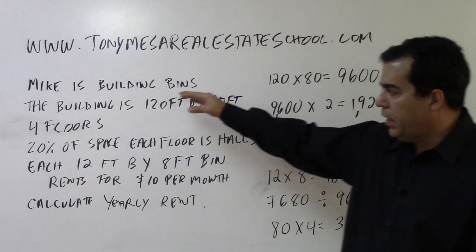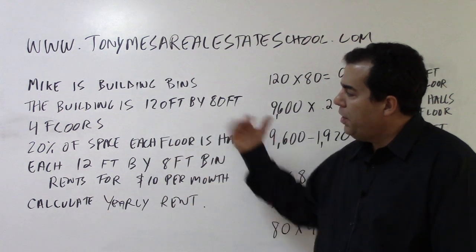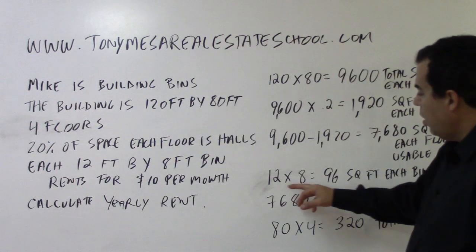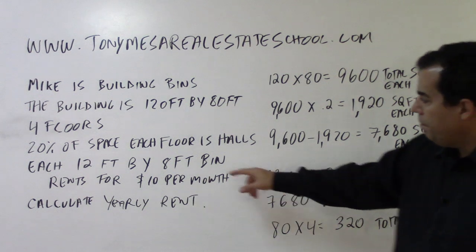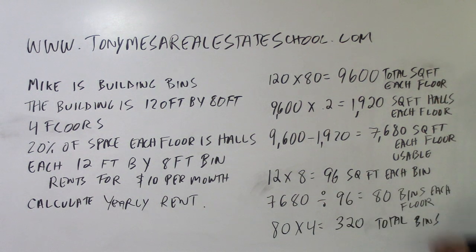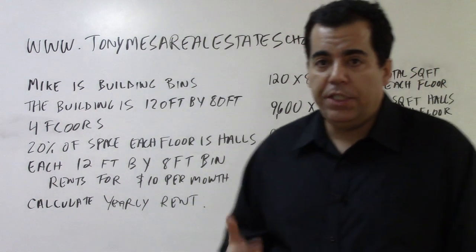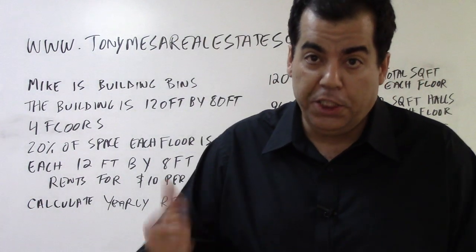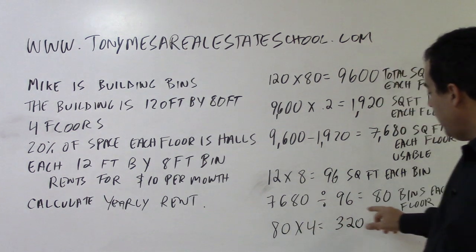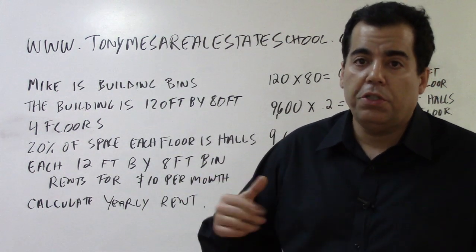Now, the next step — and note, they don't necessarily give you the problem facts in the order you should use them. Sometimes you have to jump around. Notice I haven't dealt with the four floors yet. Each bin is 12 feet by 8 feet: 12 multiplied by 8 means each bin is 96 square feet. So with 7,680 square feet of usable space per floor, and each bin being 96 square feet, you take 7,680 divided by 96, and that gives you 80 bins that you can build on each floor.